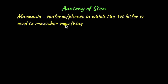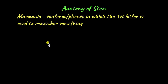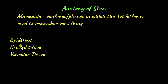So what is a mnemonic device? It is a sentence or phrase in which the first letter of each word is used to remember something. In this case, we are going to use the mnemonic device to remember the different parts of a dicot stem. When talking about anatomy of plants, our diagram should include all three types of tissues: epidermis, ground tissue, and vascular tissue. Epidermis is the outermost layer. Vascular tissue is the xylem and phloem, and all other tissue in between constitutes the ground tissue.